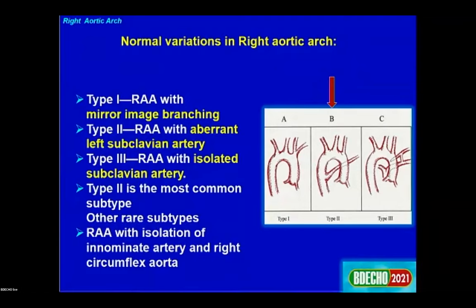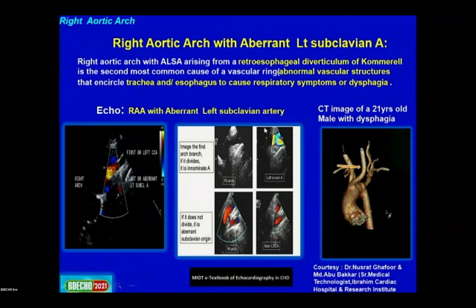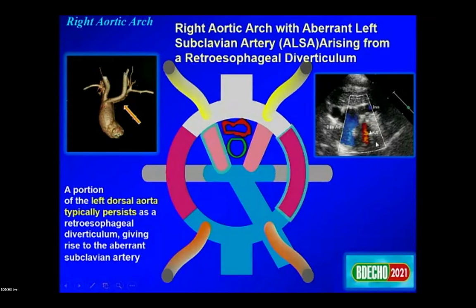Normal variations of the right aortic arch include mirror image branching, aberrant left subclavian artery, and isolated left subclavian artery. Type 2 — right aortic arch with aberrant left subclavian artery — is the most important, as it is a common cause of vascular ring and causes respiratory symptoms or dysphagia in adults. On suprasternal view, if the first branch divides it is the innominate; if it does not divide, it is the aberrant subclavian.